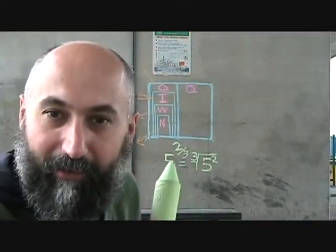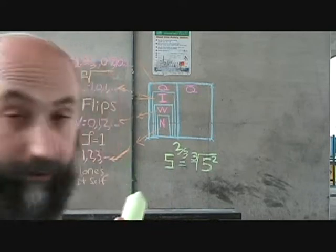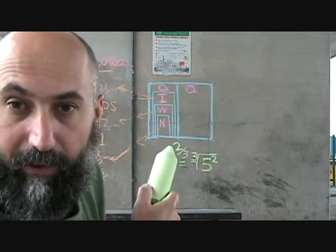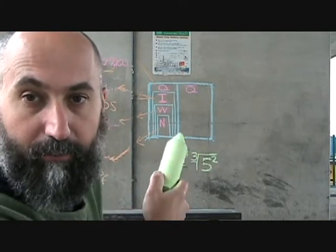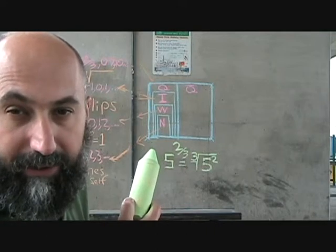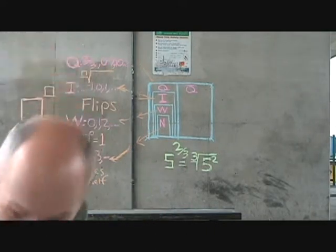We've got 5 to the power of 2 over 3. The way it works is that 3 in the denominator moves to the radical in front of the 5 — it becomes the root symbol.